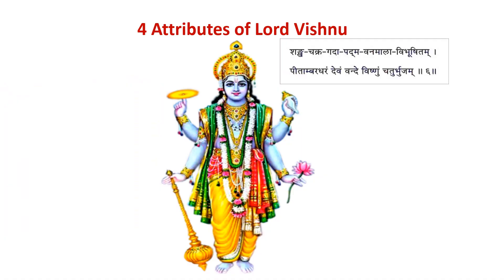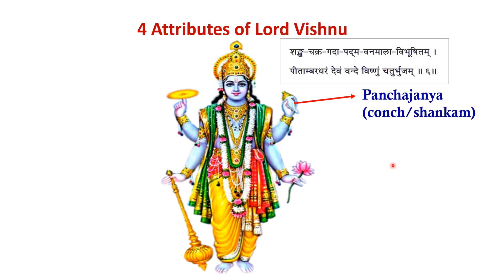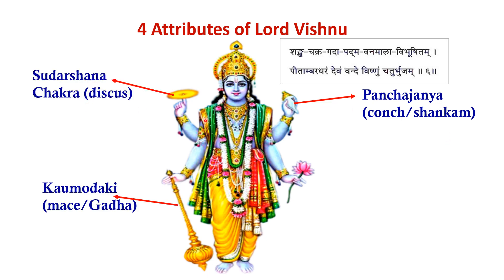Lord Vishnu is the god of preservation. Vishnu is generally depicted with four arms carrying his four attributes — Panchajanya or Shankha, Sudarshana Chakra, Kaumodaki which is Gada, and Padma which is Lotus. These are the four tools of a good leader: to communicate, to review, to reward, and to punish.